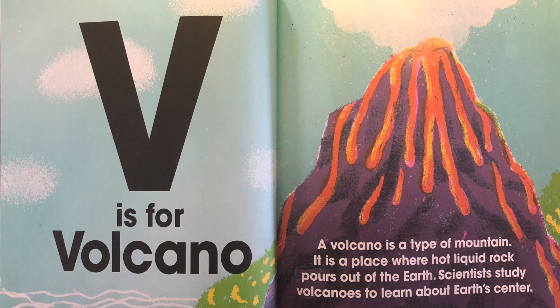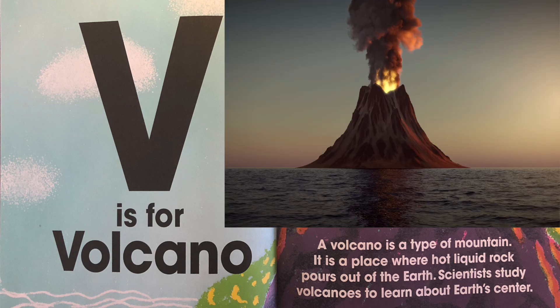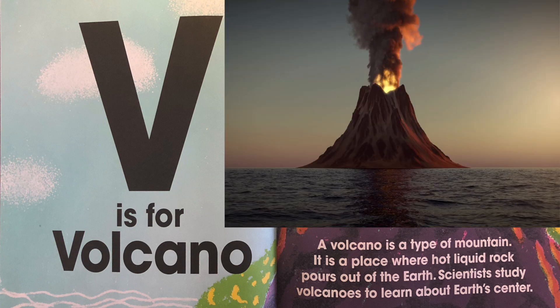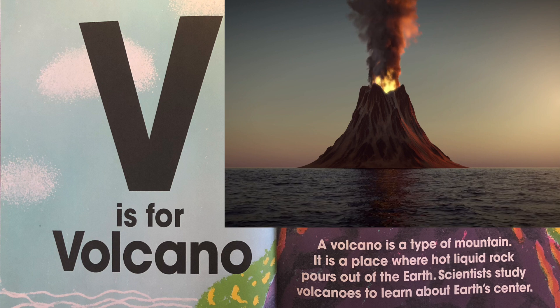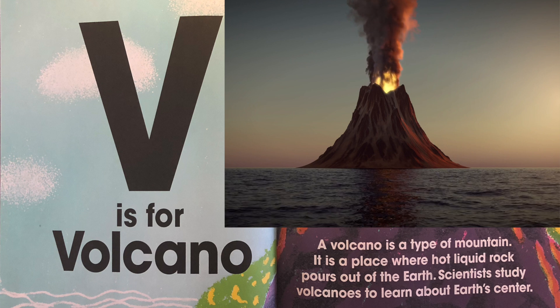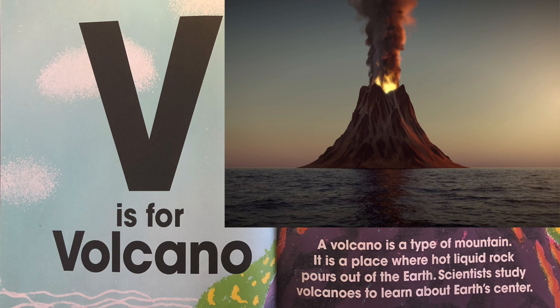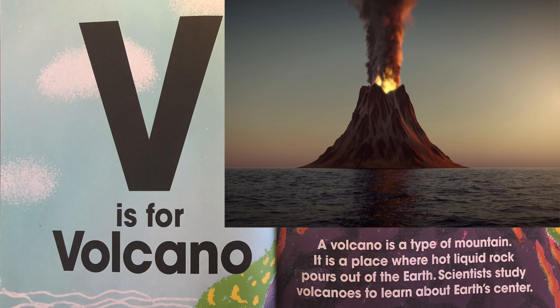V is for volcano. A volcano is a type of mountain. It's a place where hot liquid rock pours out of the earth. Scientists study volcanoes to learn about Earth's center.